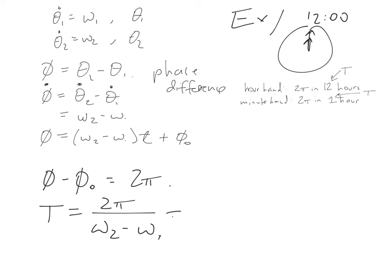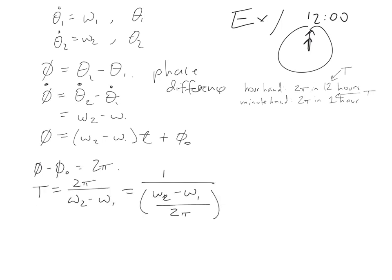And this occurs when T equals 2 pi over omega 2 minus omega 1, which equals 1 over omega 2 minus omega 1 over 2 pi.